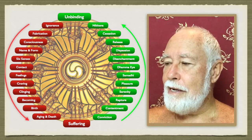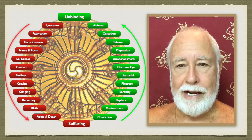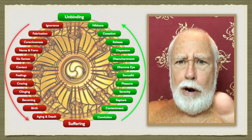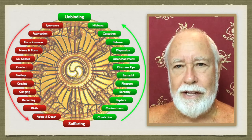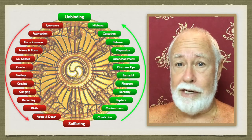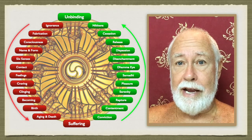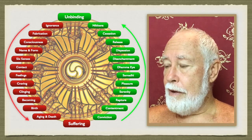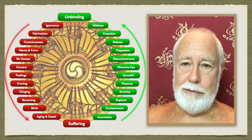Because what's the next thing after craving? Clinging. I want what I like and I don't want what I don't like - that's clinging. This gets really obsessive. And again creates lots and lots of mental impressions of the things we don't like. And then the process of becoming.